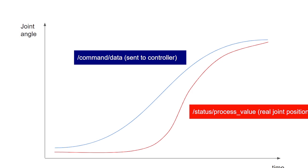You can imagine there will be an error between these two values over time. The goal is to tweak the PID values of the controllers in order to minimize that error. What we are going to do is visualize this error via a plot of these two variables over time.